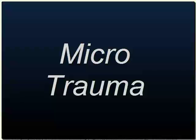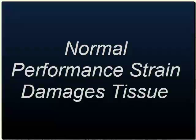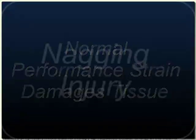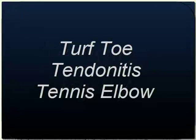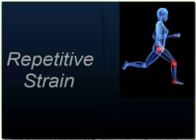This video introduces a new care method for microtrauma. Microtrauma occurs when strain from normal performance damages connective tissue. Nagging injuries like turf toe, tendinitis, and tennis elbow result when mildly injured tissue experiences repeat performance strain.